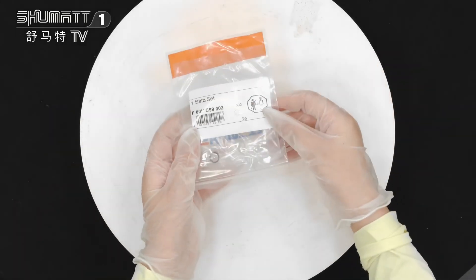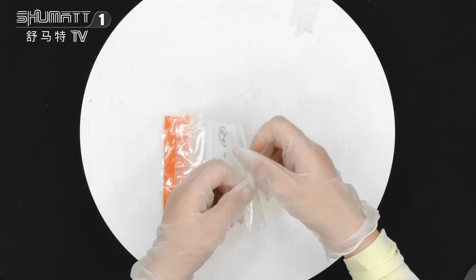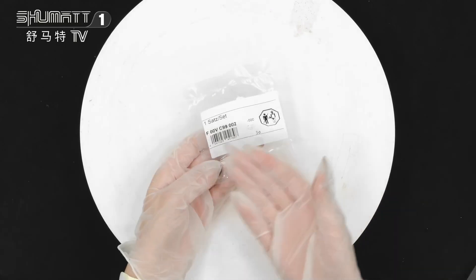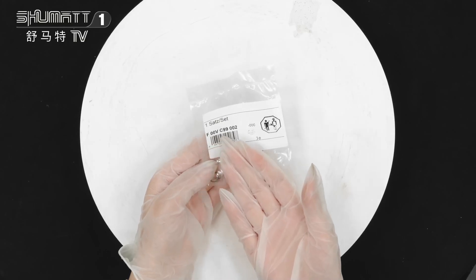Now I hope you can follow me. All right, first this is the packing - we support customized service. Now we open it for you. The product part number is F00VC99002.